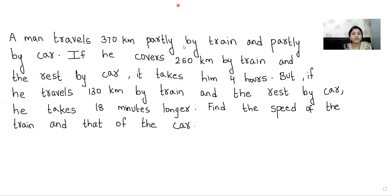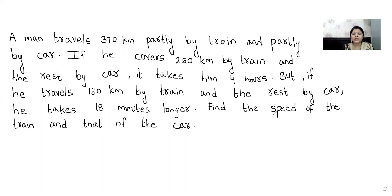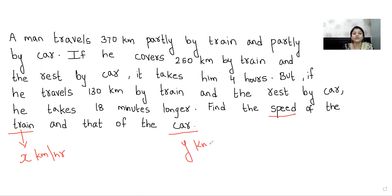In linear equations in two variables word problems, in the last line they will mostly be asking us to find two different things. Basically, whatever two different things they are asking us to find, we assume them as our two variables, x and y. In this question, they have asked us to find the speed of the train and speed of the car. So we are going to assume: let the speed of the train be x kilometers per hour and the speed of the car be y kilometers per hour.